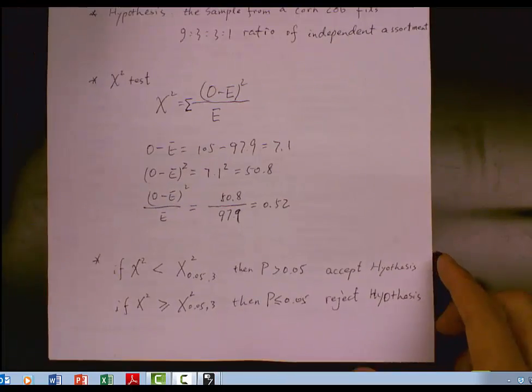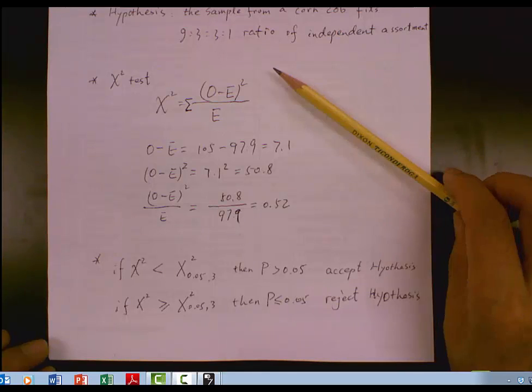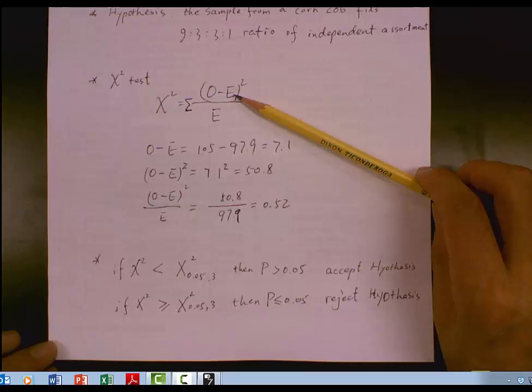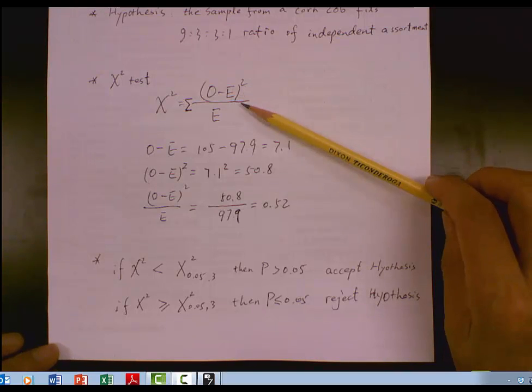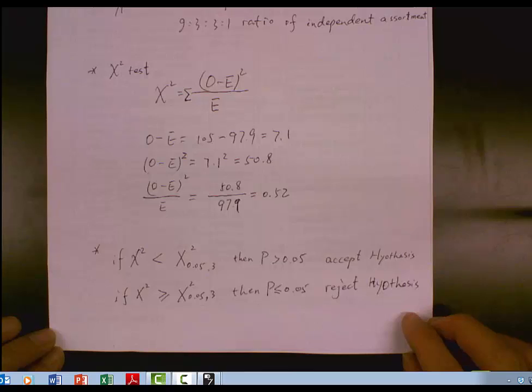Next, I will review the chi-square test and how to use chi-square statistics to make a conclusion. The chi-square test is the statistic test to test whether observed data fit a certain ratio. We have observed data and expected data, difference between this squared divided by expected. Summation of all the difference is the chi-square.